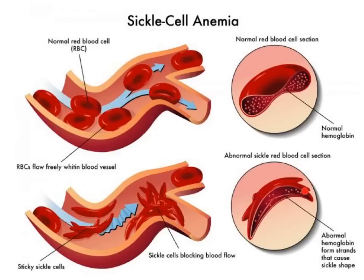And here, the sickle cells — they have these long strands, long fibers of hemoglobin that is attaching to each other. And that stretches the cells and changes the shape so that the cells can no longer flow easily through the vessels. And this causes all sorts of complications that are related to sickle cell anemia.